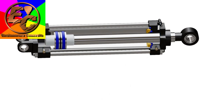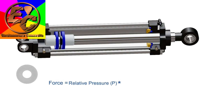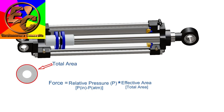The theoretical force of the actuator is the relative pressure on the piston multiplied by the effective area of the piston on which pressure is exerted. The relative pressure is the pressure of the supplied air minus atmospheric pressure. During the extension stroke, compressed air can exert pressure on the total cross-sectional area of the piston, giving us the theoretical force as relative pressure multiplied by the total area of the piston.